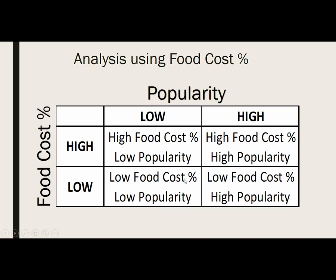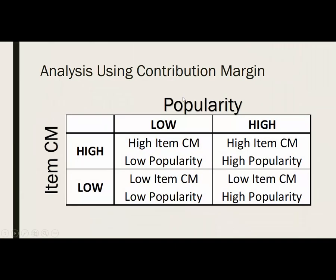An item with low food cost percentage and low popularity makes you money, since you're happy with the low food cost percentage, but you may want to see it do better popularity-wise. You may want to make it a special, highlight it, or get your servers to suggest it. Items with low food cost percentage and high popularity are great — they're popular and have a low cost percentage. You don't want to do too much with these items.